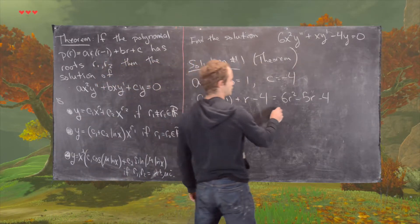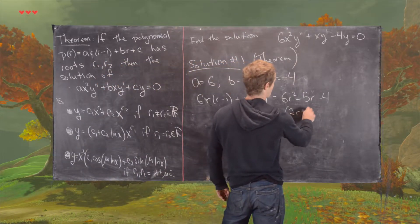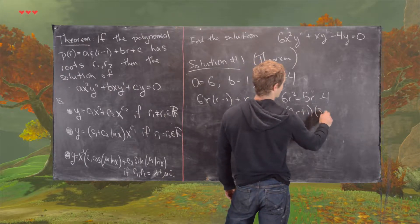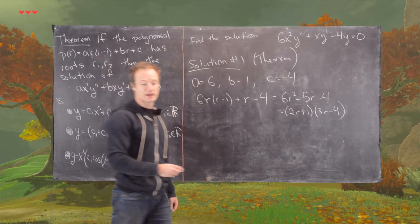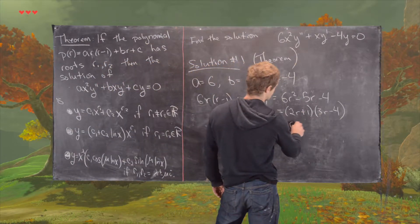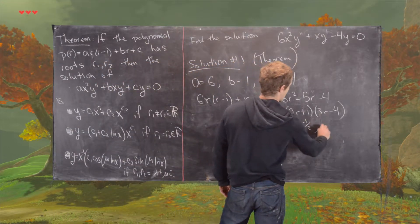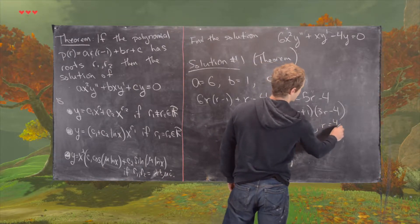And it's not too hard to check that that factors as 2R plus 1, and then 3R minus 4. And then again, we can check that this has roots R equals minus 1 half, and R equals 4 thirds.